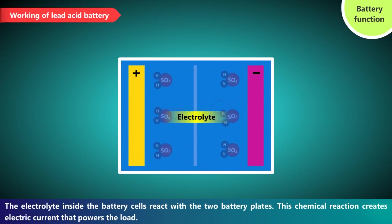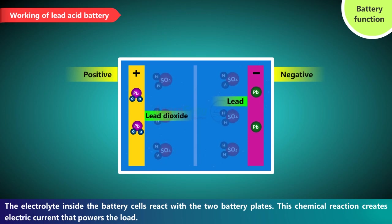Battery function. The electrolyte inside the battery cells react with the two battery plates. This chemical reaction creates electric current that powers the load.